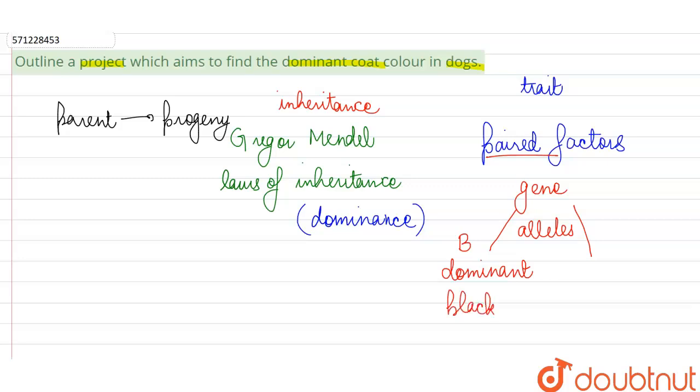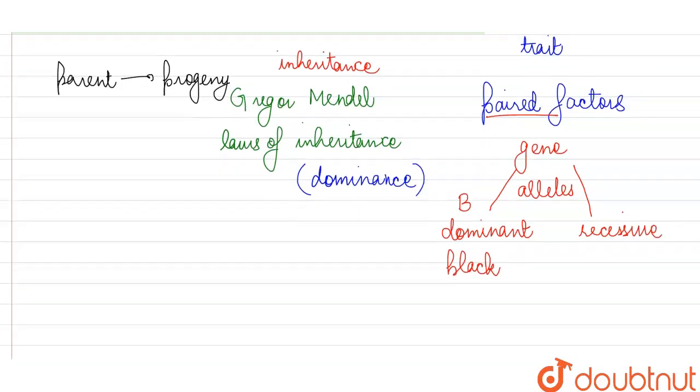And the other allele that we have, the recessive one, which is not able to express itself in the presence of dominant allele, we are going to denote it with a small b. It produces brown coat color or any lighter color, white color.